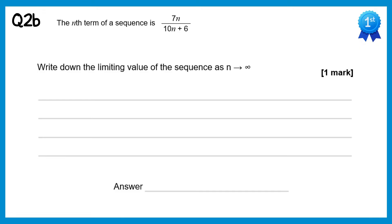Now we need to find the limiting value of the sequence. If we ignore the plus 6, we end up with 7n over 10n. Cancel the n's and you end up with 7 over 10, which you could write as 0.7.